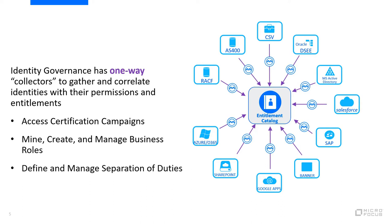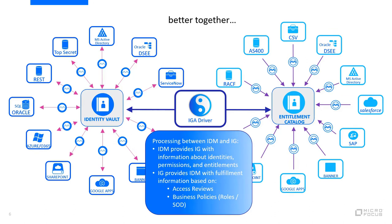The governance side is a little bit different because we have one-way collectors to pull in information into the entitlement catalog. The meta directory in this case is the entitlement catalog — that's your single pane of glass of all governance-related data. What really differentiates us from the rest of the market is when you combine both our identity vault and the entitlement catalog from identity governance, you can put them together very easily by utilizing the IGA driver. You can get started using your existing identity vault information, pull it in via the IGA driver, and immediately populate the entitlement catalog, taking advantage of all the hard work and plumbing you've already invested in.